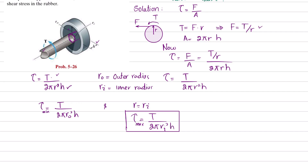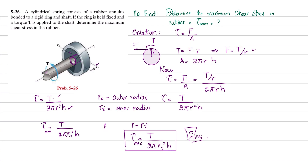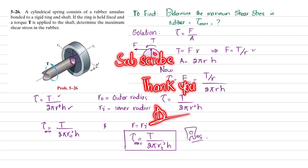Therefore, the maximum shear stress is T over 2πr_i²h — the greater maximum value compared to using r_o. That was all about problem 5-26. I hope you enjoyed it. If you're new to my channel, subscribe and press the bell icon to get notifications about my latest videos. If you have any questions, you can ask me in the comment section. Thank you for watching.